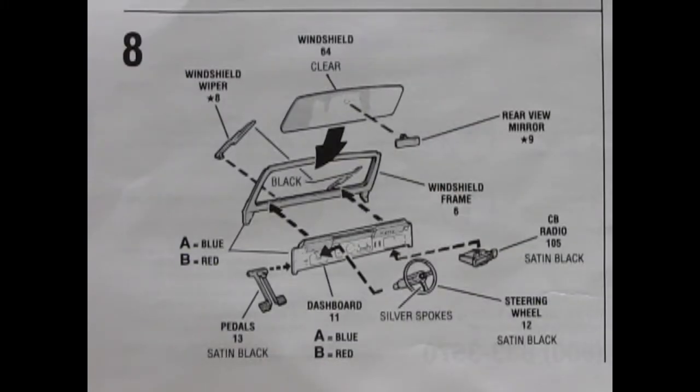Panel 8 shows the dashboard and windshield of our Jeep. You get these nice windshield wipers, rear view mirror, the clear windshield, pedals, dashboard, the steering wheel and a CB radio. What else could be more 70s?